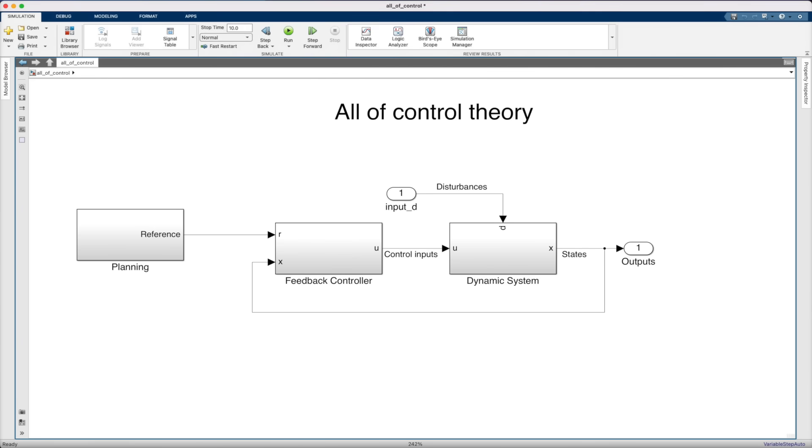All right, so once you know what you want the system to do, and you have a feedback controller to do it, now you need to actually execute this plan. And as we know, for feedback controllers, this requires knowledge of the state of the system. That is, after all, what we are feeding back. And the problem is that we don't actually know the state unless we measure it.